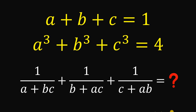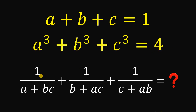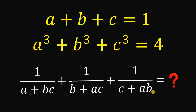Today, we will answer a Math Olympiad question, and here it is. Given A plus B plus C equals 1, and A cubed plus B cubed plus C cubed equals 4, then the goal is to evaluate this expression: 1 over (A plus B times C), plus 1 over (B plus A times C), plus 1 over (C plus A times B).